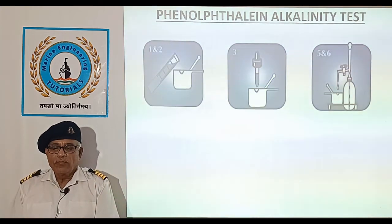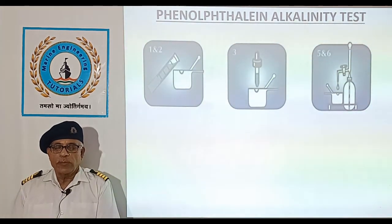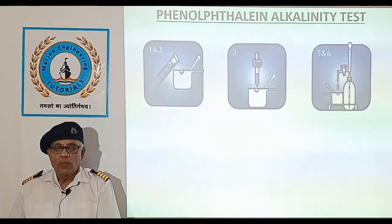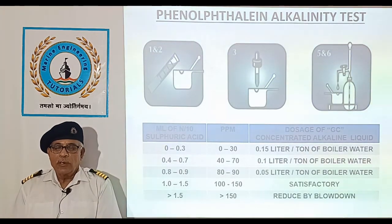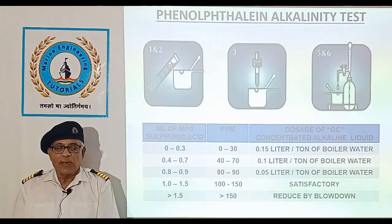Add sulfuric acid drop by drop until the pink color disappears. Note the level of acid in the burette, convert millilitres of sulfuric acid used as per the table, and record the result in ppm as P-alkalinity. Adjust dosage as necessary.